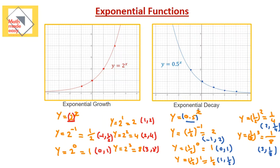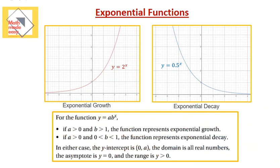From that, we can actually find a rule that we can use. The rule says, for the function y equal a times b to the power of x. Here, b is the base of the function — it had two values: 2 for the growth function and half for the decay function. So b is the base that has an exponent x. And a is another constant multiplied by it, which we didn't see here but will see in future questions.